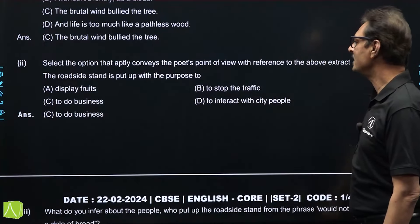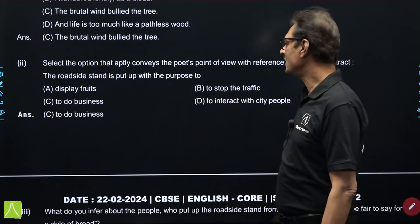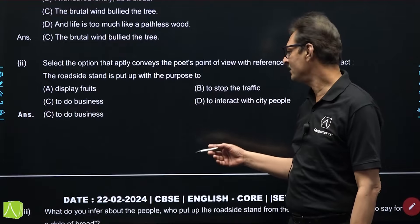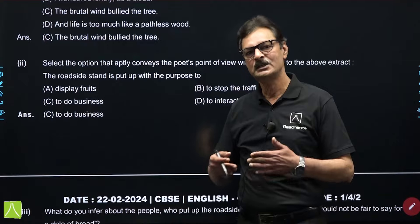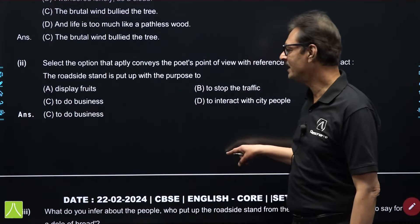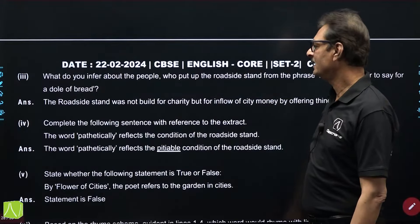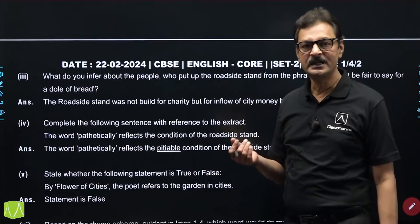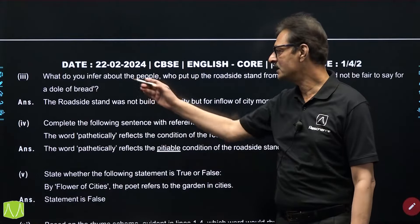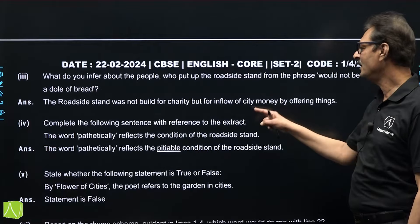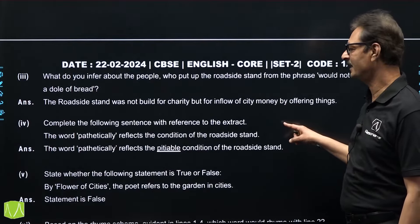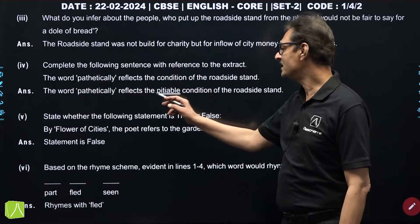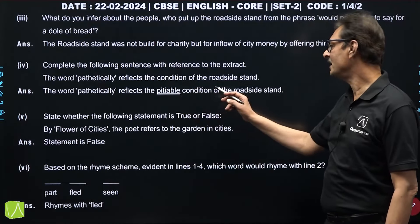The next question: select the option that aptly conveys the poet's point of view. The roadside stand is put up straightforwardly to do business — not to display fruits, not to stop traffic, not to interact with city people. They just want people to come there, stop, and purchase things from them. So the correct option should be option number C. The next: what do we infer about the people who put up the roadside stand? 'Would not be fair to say for a dole of bread' — dole means charity. This roadside stand was not set up for begging or charity, but for the inflow of city money by offering things.